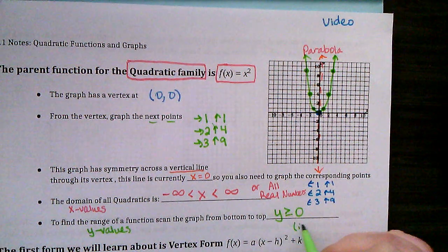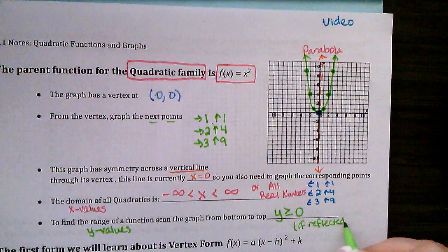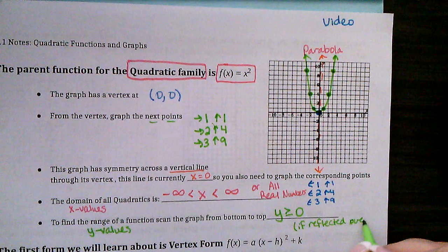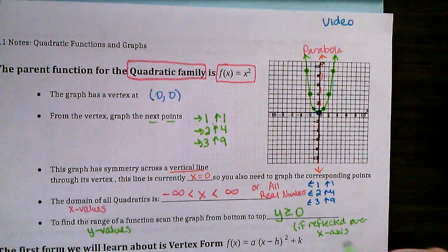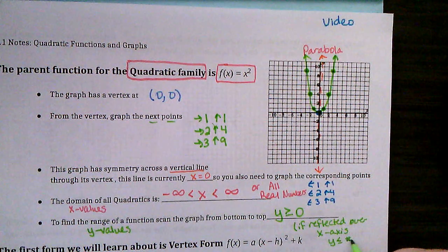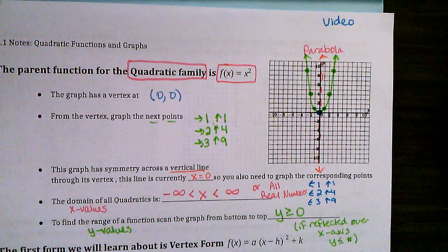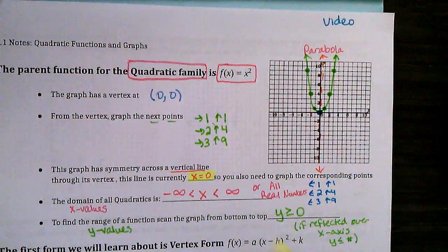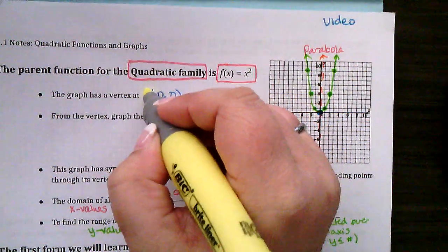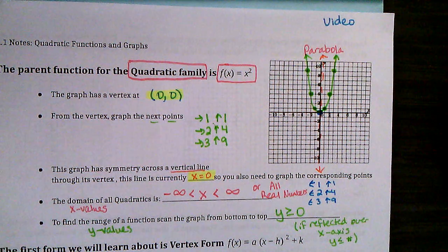Now, if this parabola is upside down — if it is reflected over the x-axis — then the range will be y is less than or equal to whatever number. Notice that the x equals 0 line of symmetry and the y value of 0 are going to have something to do with each other in a moment.